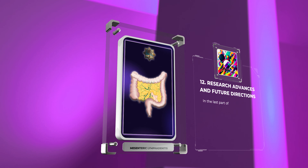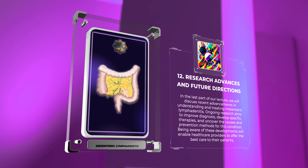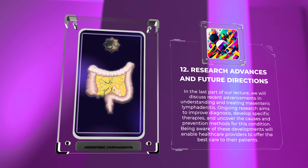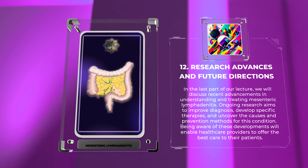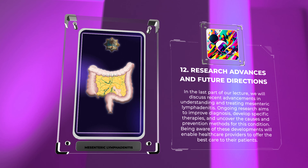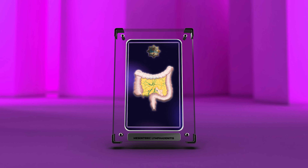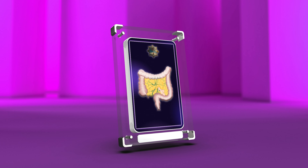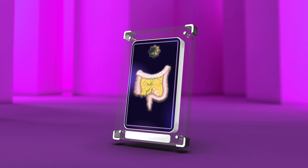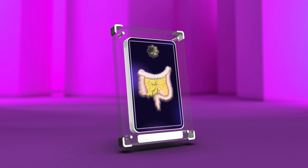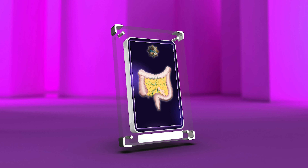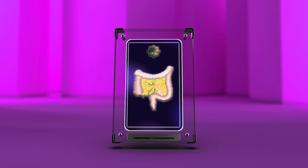In the last part of our lecture, we will discuss recent advancements in understanding and treating mesenteric lymphadenitis. Ongoing research aims to improve diagnosis, develop specific therapies, and uncover the causes and prevention methods for this condition. Being aware of these developments will enable healthcare providers to offer the best care to their patients. To conclude, mesenteric lymphadenitis is a complex condition that demands a thorough understanding of its anatomy, pathogenesis, presentation, diagnosis, treatment, and associations. Staying updated on research will further improve patient care. Thank you for joining me in exploring mesenteric lymphadenitis.